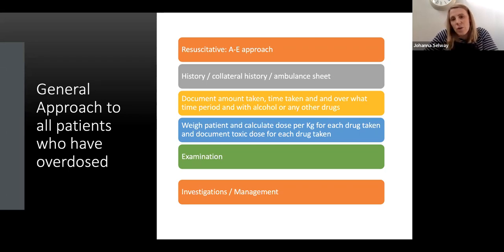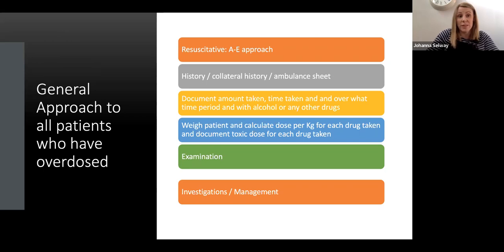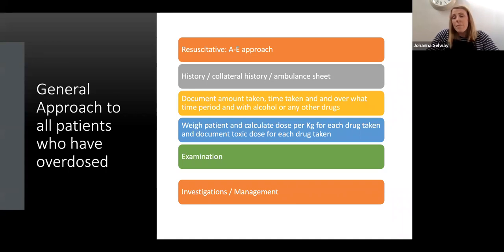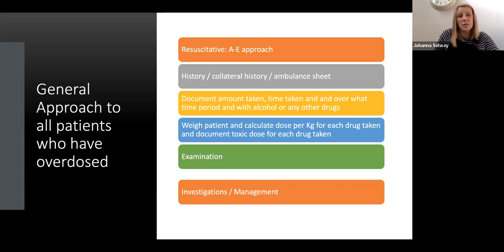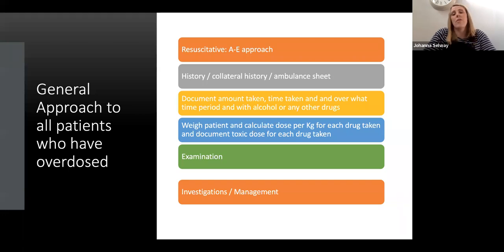It's really important to document the time the overdose was taken, what was taken, the amounts, and over what time period — because that matters if they've staggered a dose. Also document if it was taken with other medication, over-the-counter drugs, illicit drugs, or alcohol. It's really important that you weigh your patient so you can calculate the dose taken. Weight can be deceiving — someone you think is 70 kg might only be 45 kg, making a huge difference in how toxic the ingestion is. Calculate the dosage per kilogram for each drug taken.